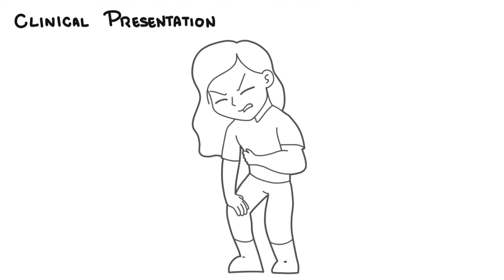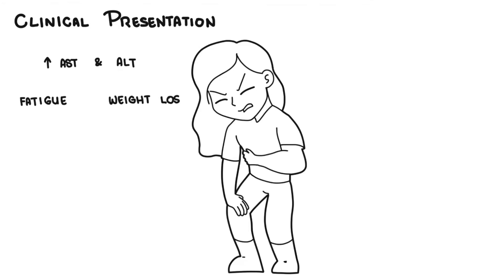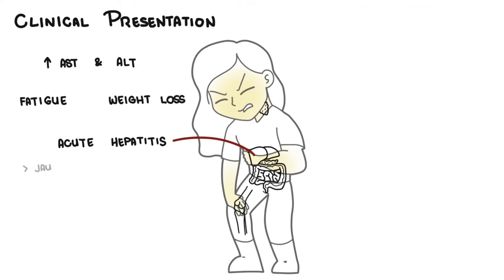Autoimmune hepatitis can have a range of presentations. Typically, people can present with asymptomatic elevation of deranged liver function tests — specifically AST and ALT levels — along with fatigue and weight loss. They could also present with acute hepatitis, where someone can be jaundiced and develop right upper quadrant pain. Rarely, someone will present with acute liver failure.